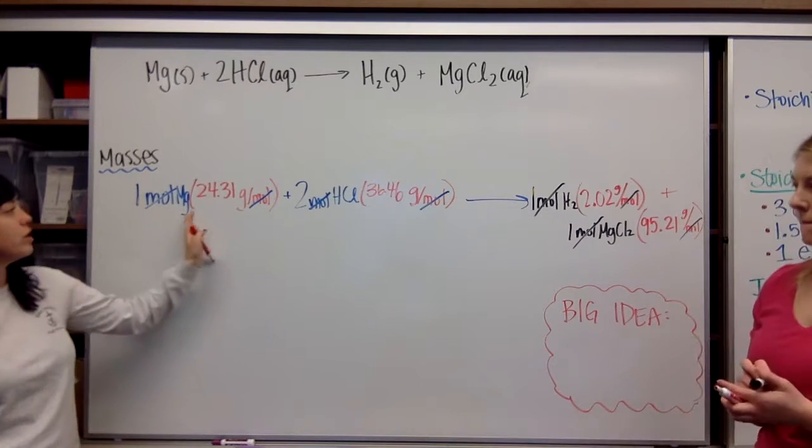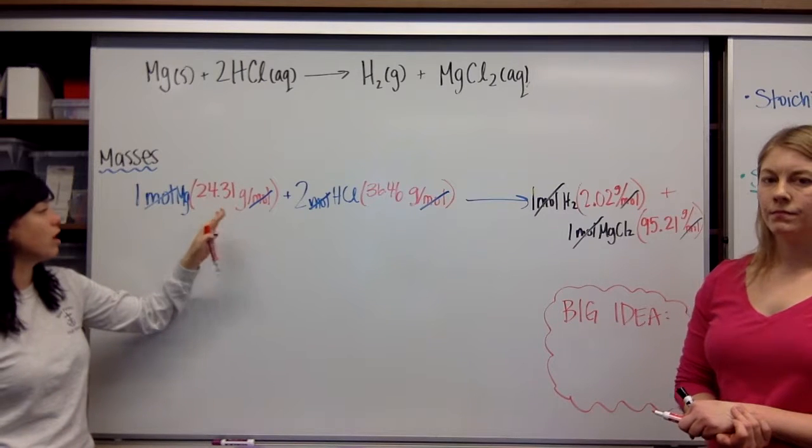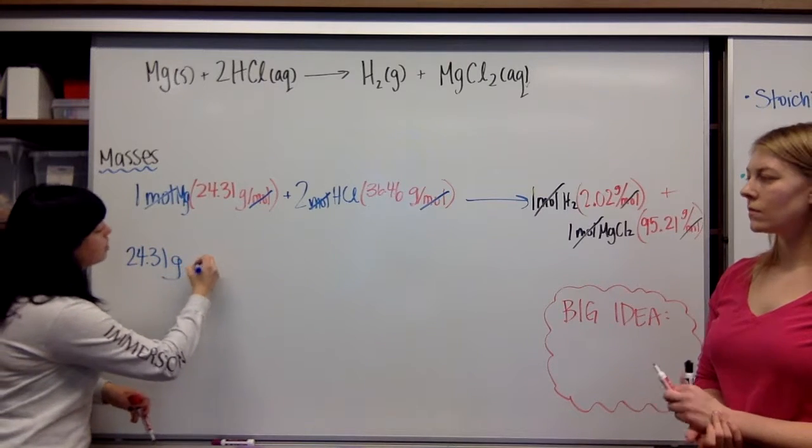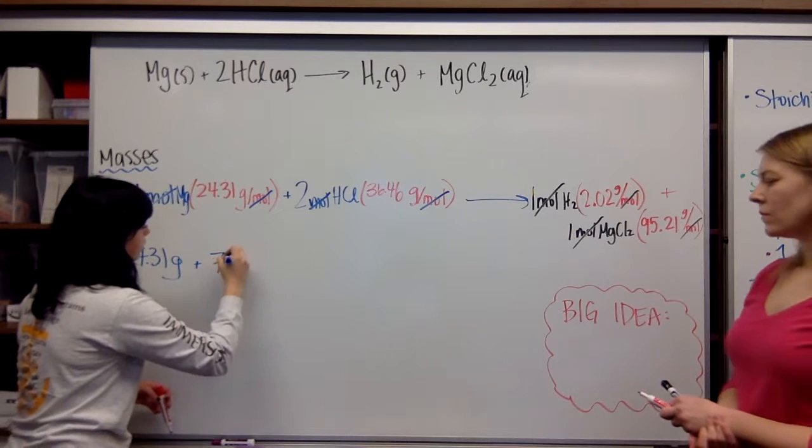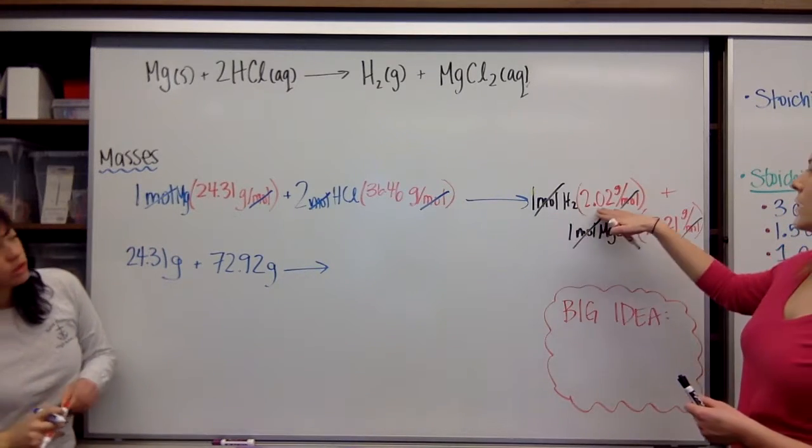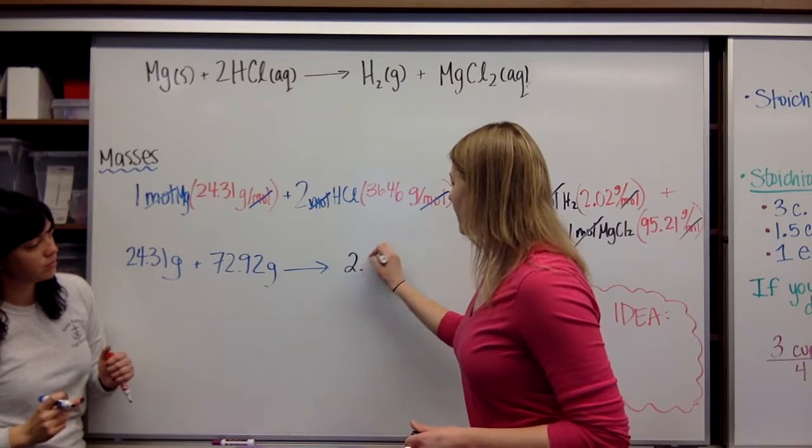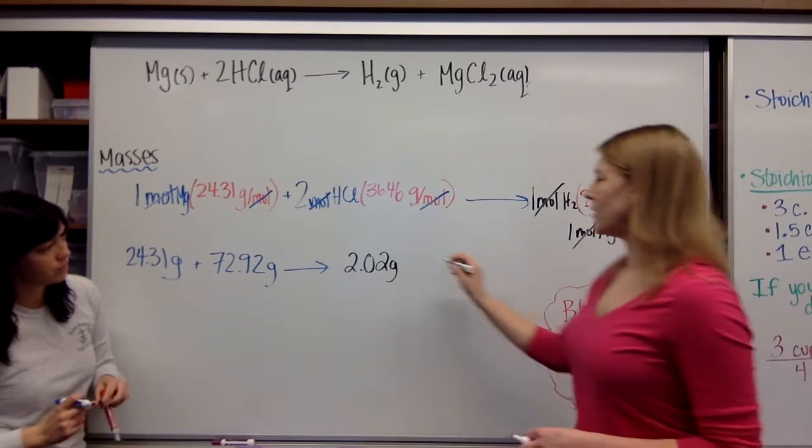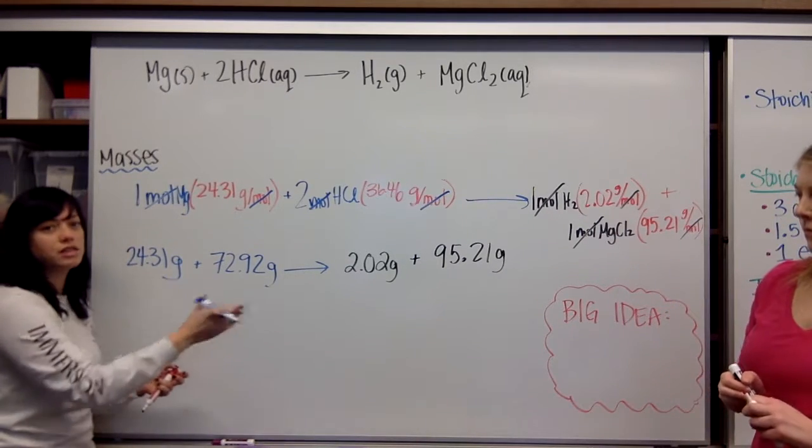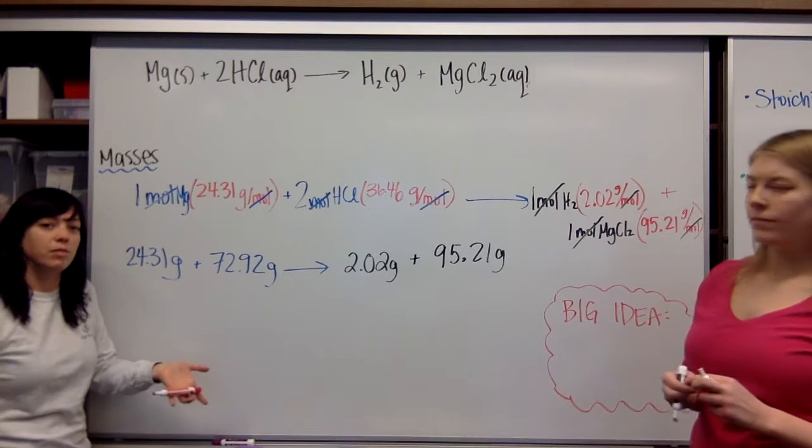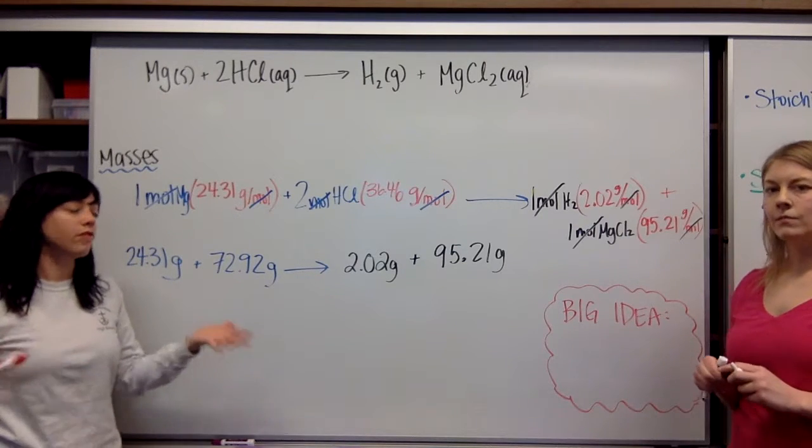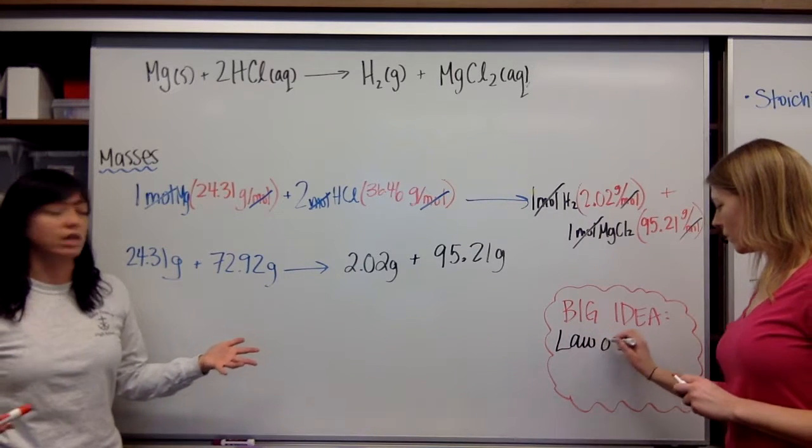Now, we do have to multiply through, right? So, my one mole of magnesium is still going to be equal to 24.31 grams plus 2 times 36.46, that's where the 72.92 grams comes from, which should yield we have 1 times 2.02, so that is 2.02 grams, and 1 times 95.21 is just 95.21 grams. So, now you're going to see that if we add our reactants and we add our products together, we will get the same number of grams on each side, which is what we want. We're demonstrating and we're following the law of conservation of mass, which is why we balanced our equation in the first place.